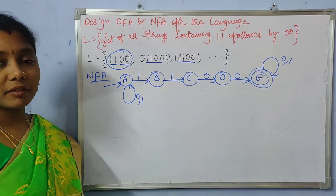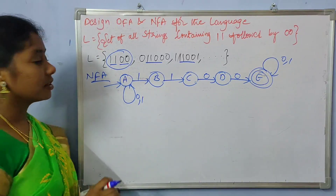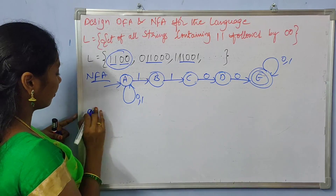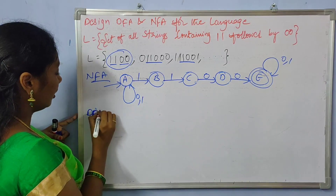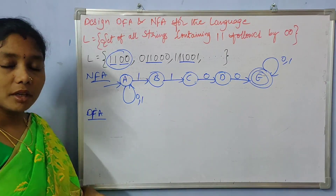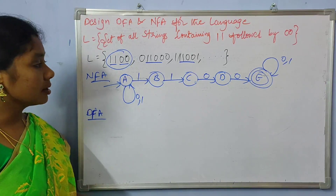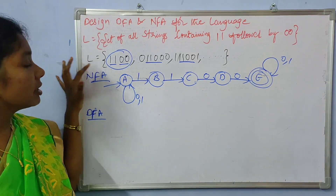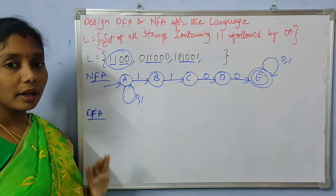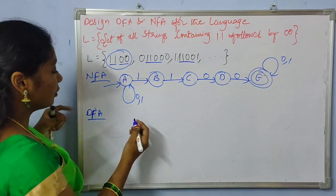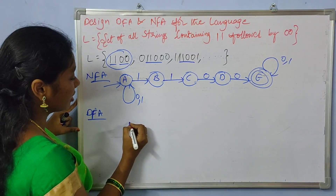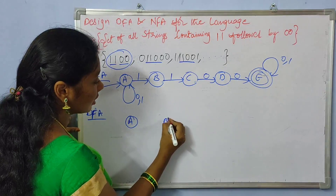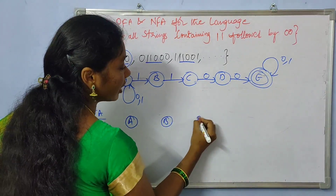Then what is the DFA for the given problem? How to construct the DFA? So now let us construct the DFA. Here also the same thing — we need to have five states because the minimal string is of length four, so we need five states.